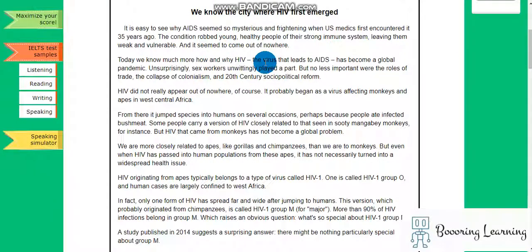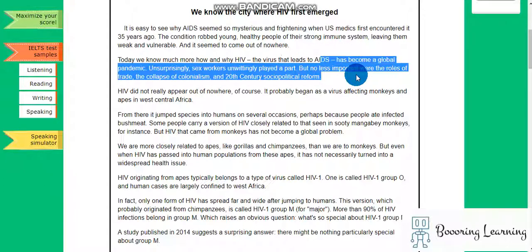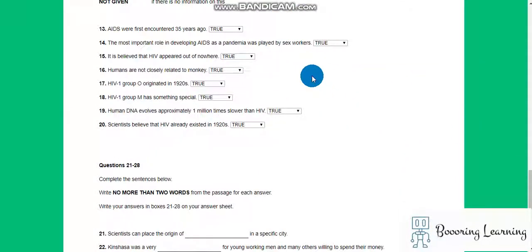Today we know much more about how and why HIV, the virus that leads to AIDS, has become a global pandemic. Unsurprisingly, sex workers unwittingly played a part, but no less important were the roles of trade and the collapse of colonialism. They played a part. The most important role - it is false.